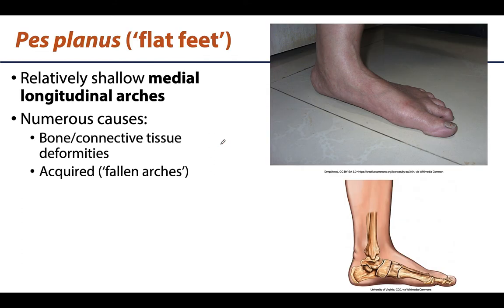In some cases there can be a relatively shallow medial longitudinal arch, referred to as pes planus or flat feet — you can see an example with the medial longitudinal arch truly touching the ground during standing. There are numerous causes including bone or connective tissue deformities, which can be congenital, or acquired through damage to supporting structures. When acquired, this is often called fallen arches, resulting from repetitive use or inflammation causing destruction over time.